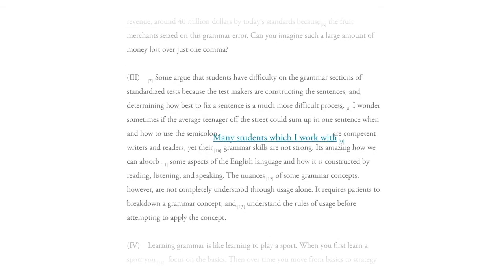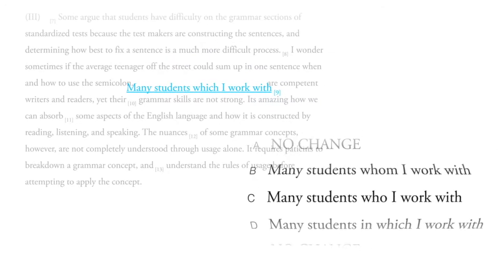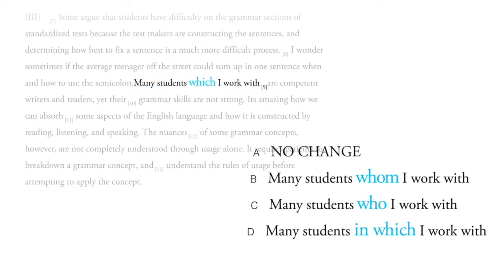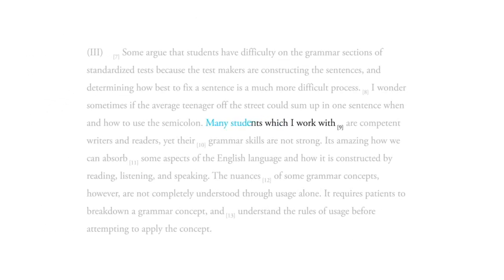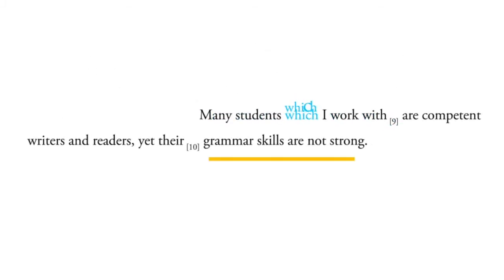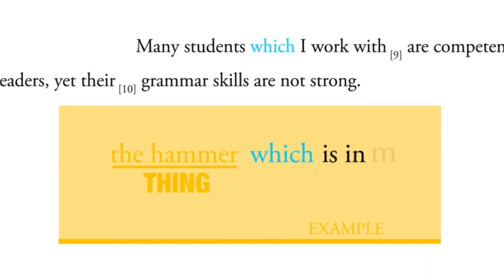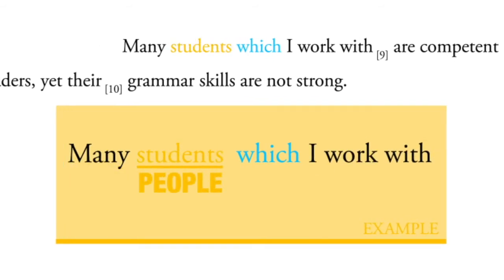Question nine. This question focuses on wording. As you look through your answer choices, you can see you're trying to decide between which, whom, who, and in which. I think it reads odd — when you read 'many students, which I work with,' something about that doesn't sound right. That's because 'which' follows a thing, like 'the hammer, which is in my hand.' But students are people, so we have to use who or whom.